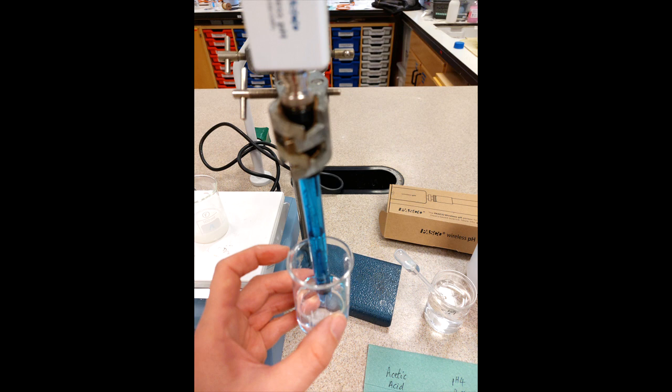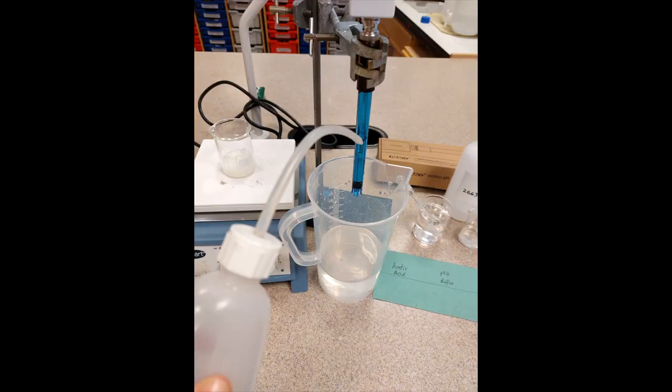So here we've got a beaker of one of the pH buffers and we're just holding in the sensor and monitoring that on a device using the Pasco Spark View app. Then each time it reaches that pH calibration point we're rinsing the probe.